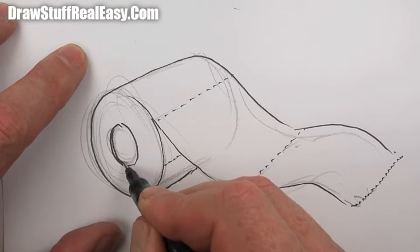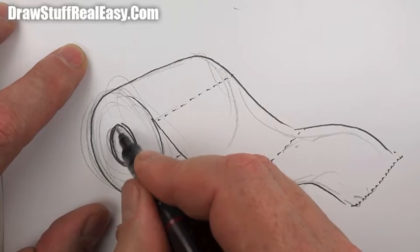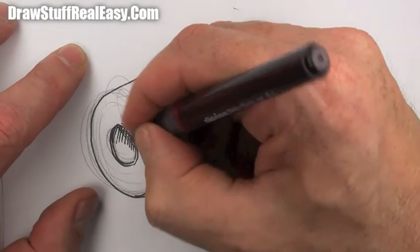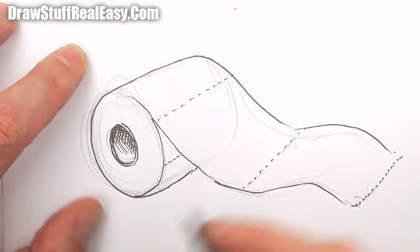And you want some shading underneath there that just kind of puts it on the table, as it were.